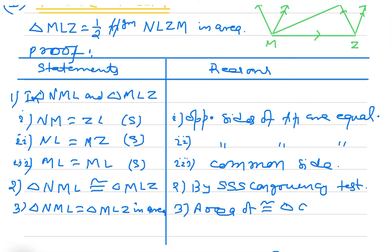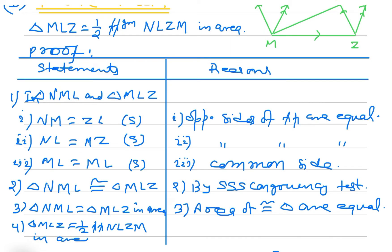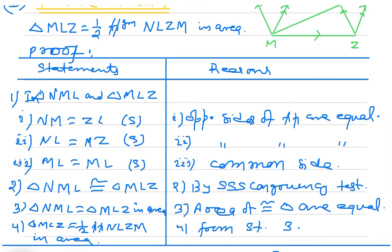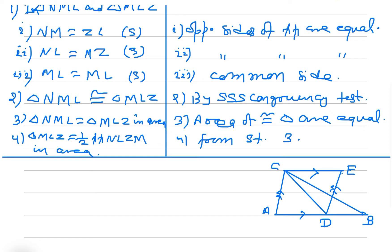Therefore, triangle NML is congruent to triangle MLZ by the SSS congruency test. From congruency, triangle NML is equal to triangle MLZ in area. Finally, triangle MLZ is equal to half of parallelogram NLZM in area, from statement three. Hence proved.